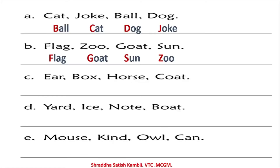The remaining exercises D and E I will leave for you to solve. So in list C: box comes first, then coat, then ear, and finally horse. Try and write the answers to the next two on your own as a little bit of practice.